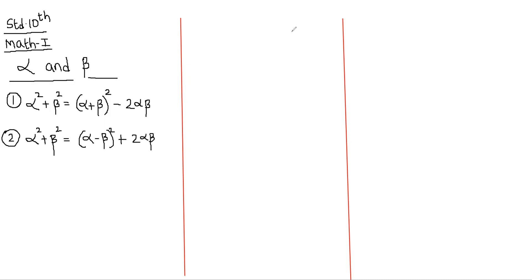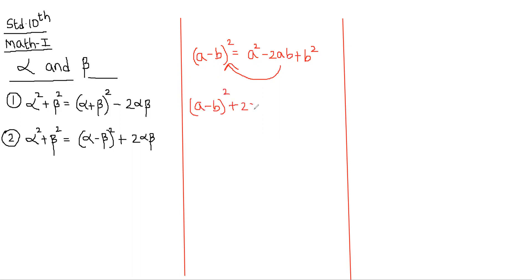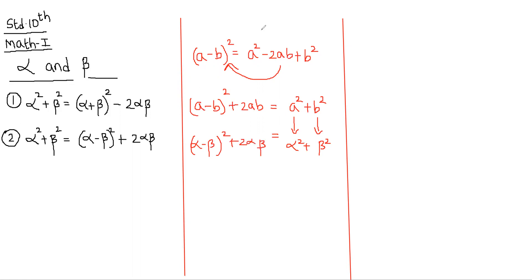This is again derived from (a - b) whole squared, which is a² - 2ab + b². When minus 2ab moves to the left hand side, we get (a - b)² + 2ab = a² + b². Substituting a as alpha and b as beta, we get alpha squared plus beta squared equals (alpha minus beta) whole squared plus 2 alpha beta. This is our second formula.